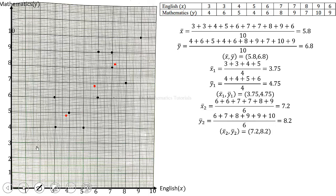These are plotted in the red ink. So this is the mean, it means 5.8, 6.8. Then we have 7.2, 8.2, which is here. Then we have 3.75, 4.75, which is here. So we draw a straight line through all these points. That will give us the line of best fit.